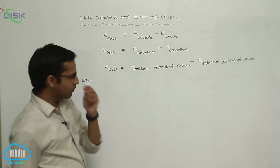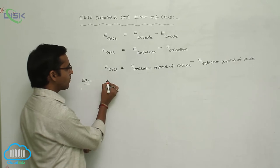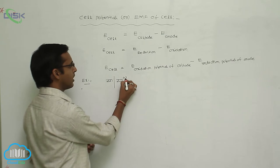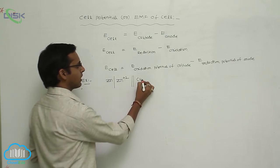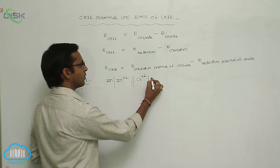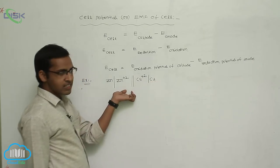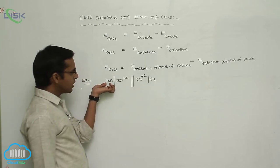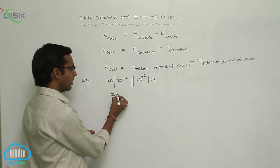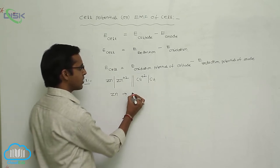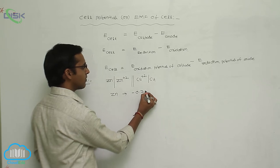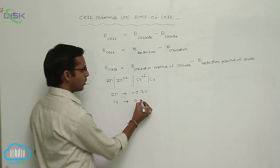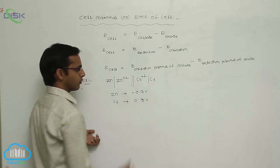For example, calculate the EMF of cell for the following cell reaction: Zn | Zn²⁺ || Cu²⁺ | Cu. This is the Daniel cell reaction, a galvanic cell reaction. The zinc reduction potential value is −0.76 volt and the copper reduction potential value is 0.34 volt.